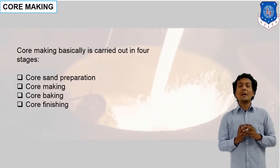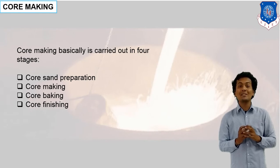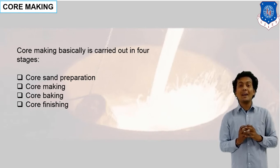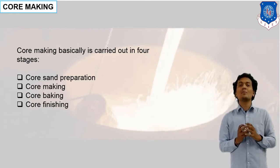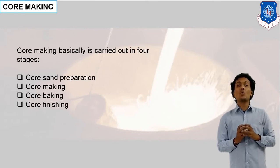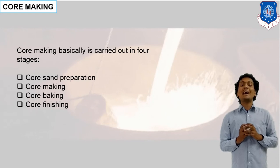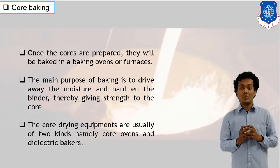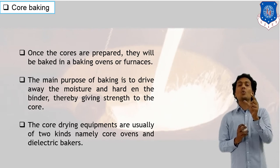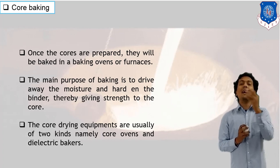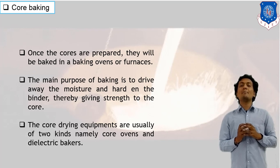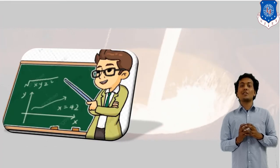How do we make a core? First, we take the sand and prepare it by adding additives and binder. After that, we make the core using core boxes. Then we put the core in an oven — this is called core baking. By putting the core in the oven, moisture is driven out and a hard core is formed. So core baking means removing moisture from the core by placing it in the oven.